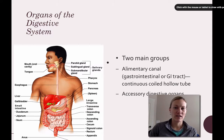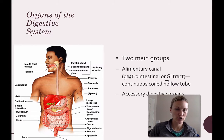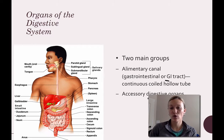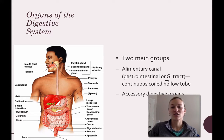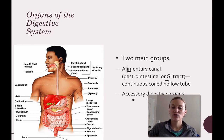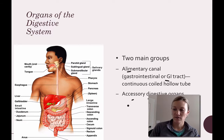There are two main groups of the alimentary canal. You have the GI tract, or the alimentary canal, which is the actual continuous hollow tube — the opening from your mouth all the way to your anus. And then you have the accessory digestive organs, which are all the other organs associated with the digestive system but not necessarily part of the GI tract.